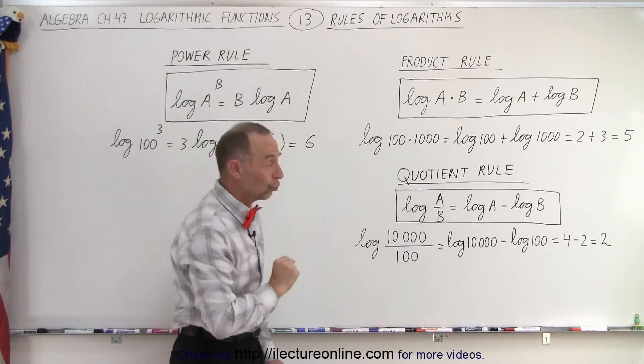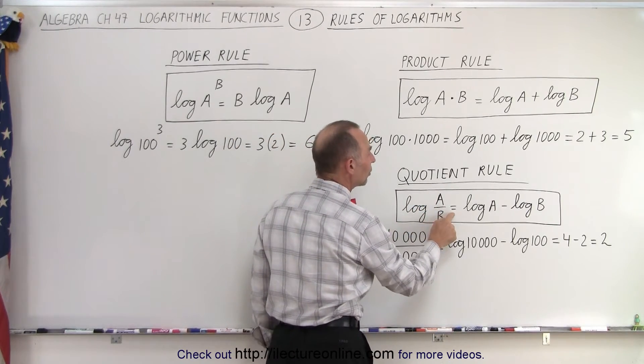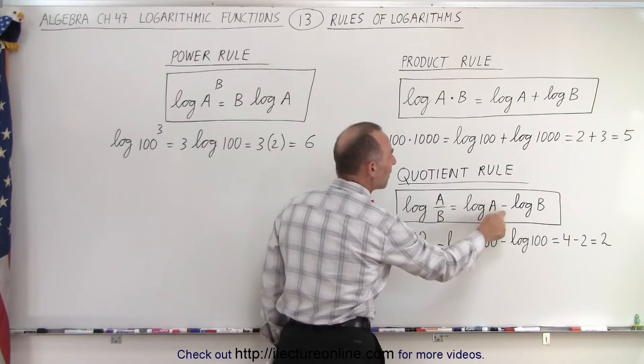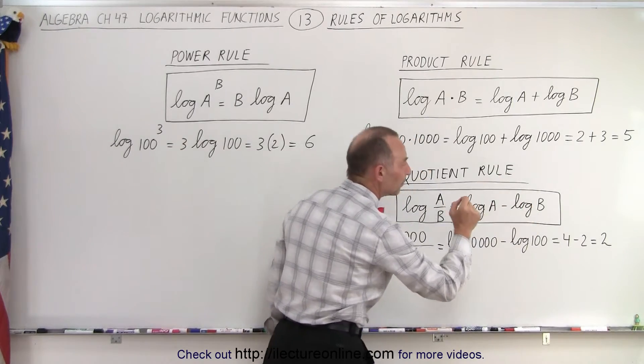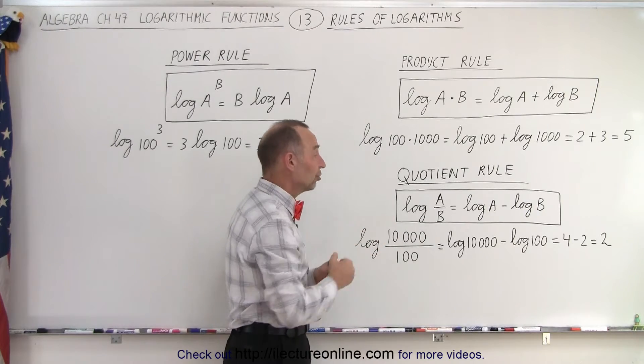Now, the quotient rule. If we take the log of a quotient, A divided by B, that is equal to the log of the numerator minus the log of the denominator. So again, it takes a division and turns it into a subtraction.